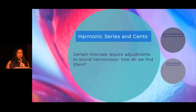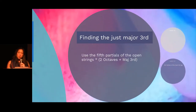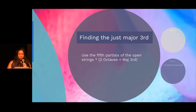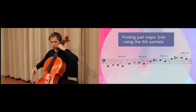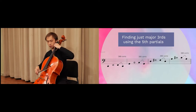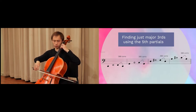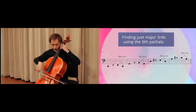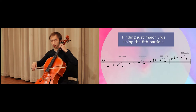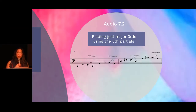Certain intervals require adjustments to sound harmonious, but how are you going to find them? One needs to be able to hear the difference. In order to find a just major third, we rely heavily on the natural harmonics. We're going to use the fifth partials of the open strings, which is two octaves plus a major third above the fundamental string to find the pitch. In the exercises in Cello Mind, we use the harmonic as a reference and then find the exact pitch with the solid note.